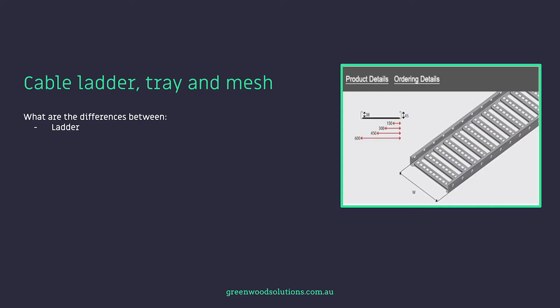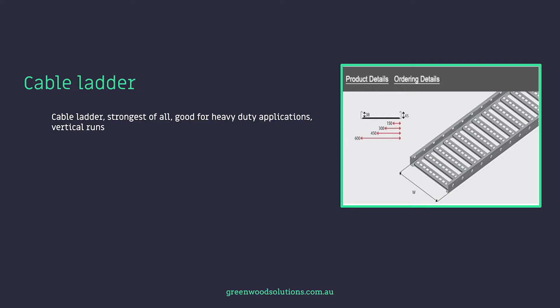Cable enclosures fall into three categories: ladder, tray, and mesh. Cable ladder is very heavy duty — imagine a ladder leaning up against a wall, but connected to the wall, with very thick cables, usually on the AC side, attached to it. The ladder is a lot heavier duty than tray.